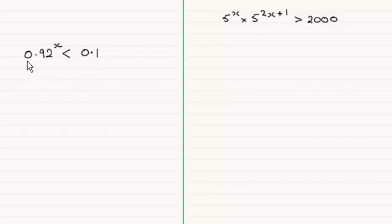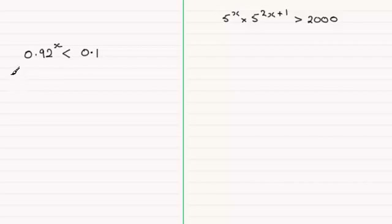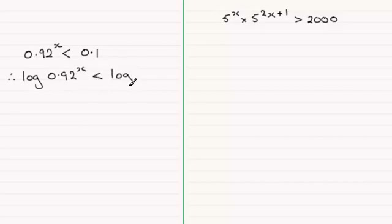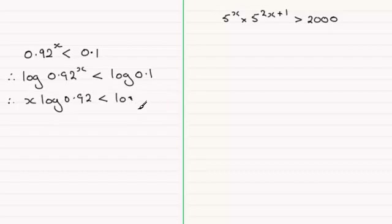For this first one, we've got 0.92 to the power x is less than 0.1. To solve this, the best thing you can do is take logs in any base to both sides. I would suggest taking logs to base 10. So we're going to have log of 0.92 to the power x is less than log of 0.1. And then by the power rule for logs, we can bring the x out to the front, so you get x log of 0.92 is less than log of 0.1.